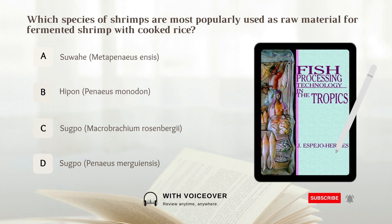Which species of shrimps are most popularly used as raw material for fermented shrimp with cooked rice?